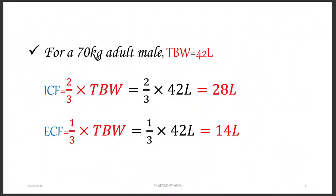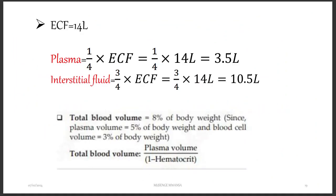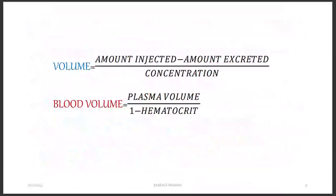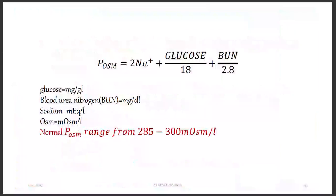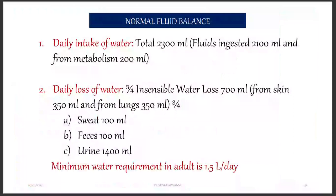So in total, for a person that is 70 kg — an adult male — the total body fluid is 42 liters. That's the standard we use. We also talked about how you can measure the different body fluid compartments and the dyes used for each. You need to know which dye measures which compartment, and also make sure you know the dye dilution method.